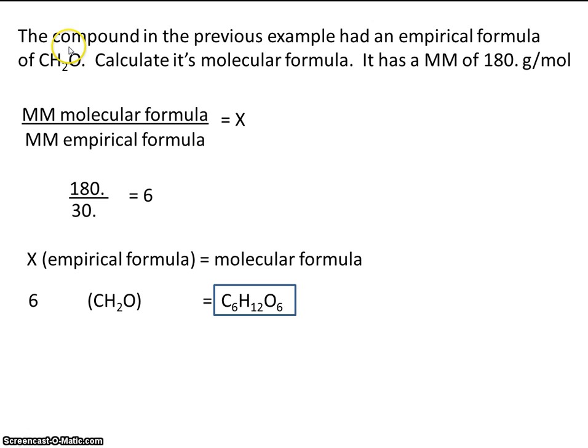So here is our molecular formula. This was the empirical formula, the smallest whole number ratio, and this is the actual formula. Notice you can reduce this, of course, to 1, 2, 1, and that again would be just the empirical formula.